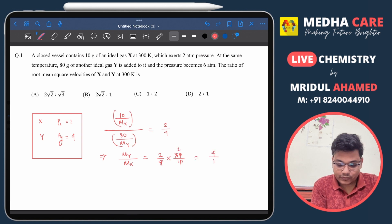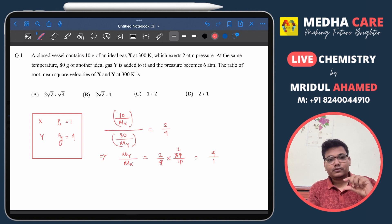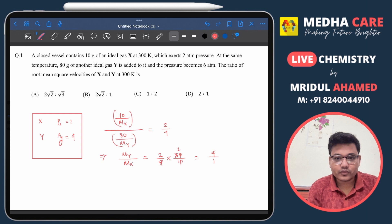That will be 4 to 1. So the ratio of molar masses will be 4 to 1.